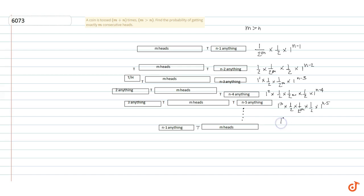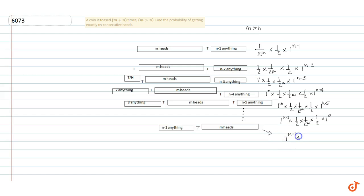Continuing the pattern, a general case has probability: 1 to the power n minus 2, times one-half, times 1 over 2 to the power m, times one-half, times 1 to the power 0. The last case has probability: 1 to the power n minus 1, times one-half, times 1 over 2 to the power m.